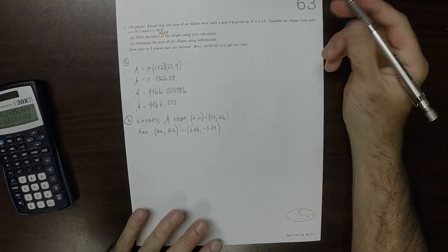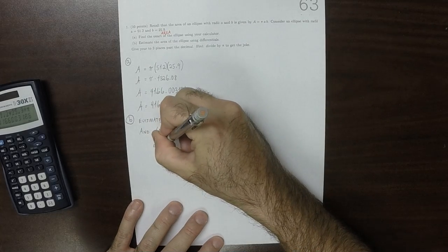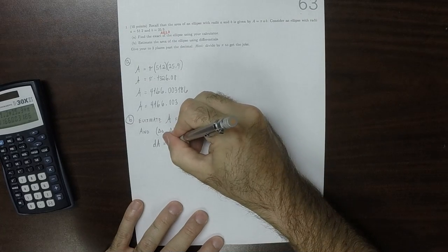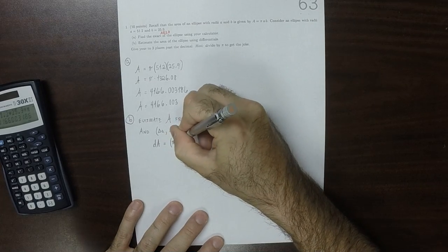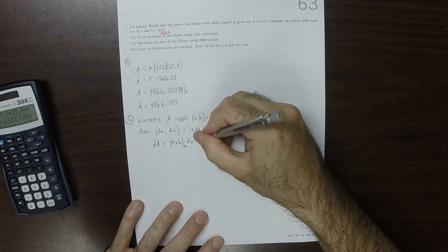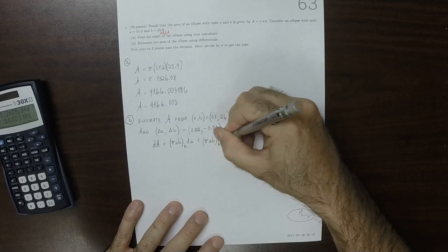The differential dA is the partial of πab with respect to a times da, plus the partial of πab with respect to b times db.